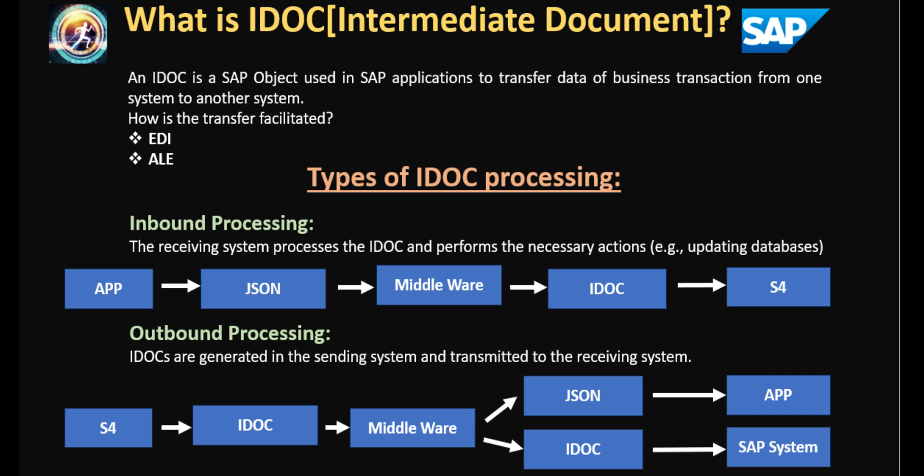In inbound processing, we have a third party non-SAP application that sends information — usually in the form of JSON or XML. Then we have the middleware, which converts that JSON into a format that SAP can understand, which is IDOC. Once that conversion happens, it is sent to the S4 system. For example, if a purchase order is created by a third party system, that information can be sent to S4 via IDOC, and S4 will internally create that purchase order. Once the IDOC gets processed, the purchase order can be created in S4 as well.